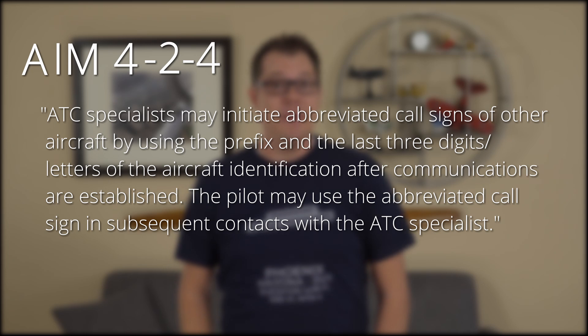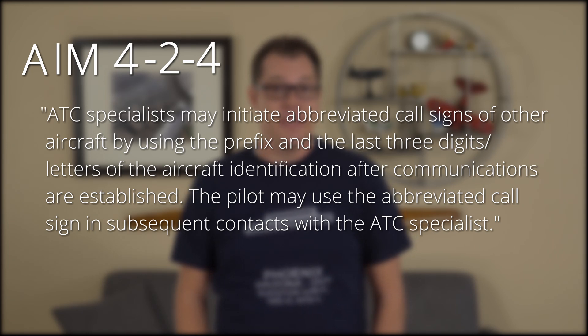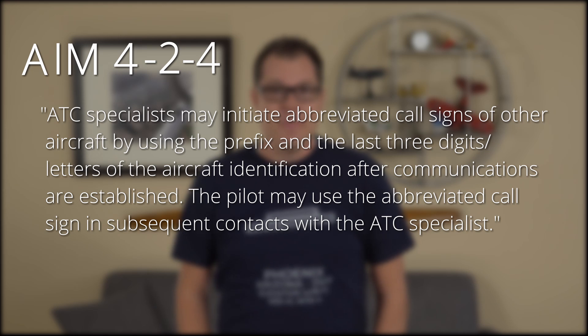The AIM states that air traffic control specialists may initiate abbreviated call signs of other aircraft by using the prefix and the last three digits or letters of the aircraft identification. After communications are established, the pilot may use abbreviated call signs in subsequent contacts with air traffic control specialists. So don't abbreviate your call sign when you make contact with ATC until after they do.